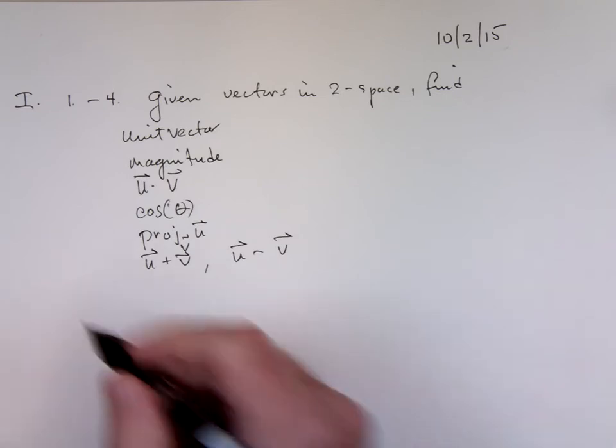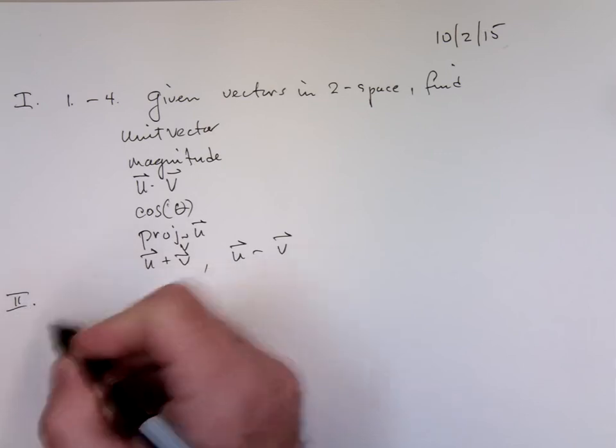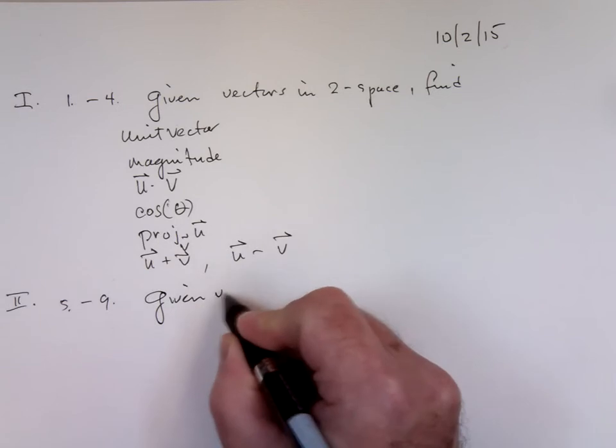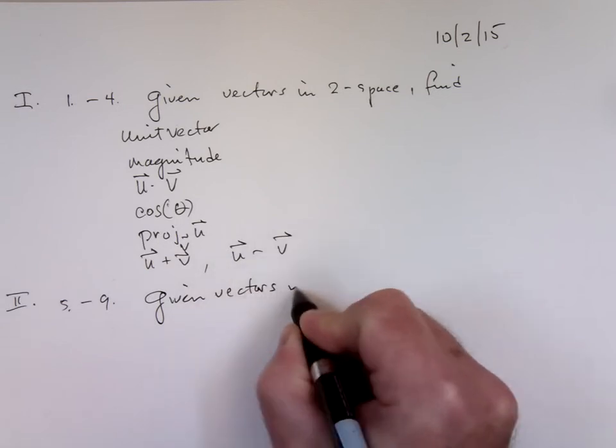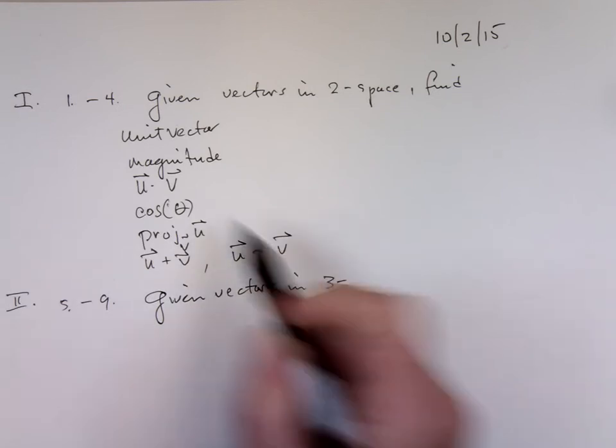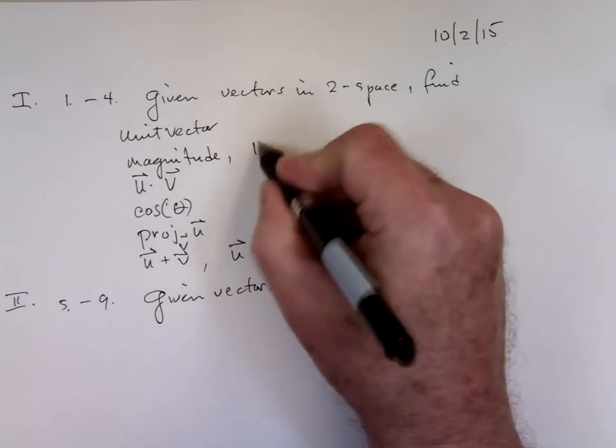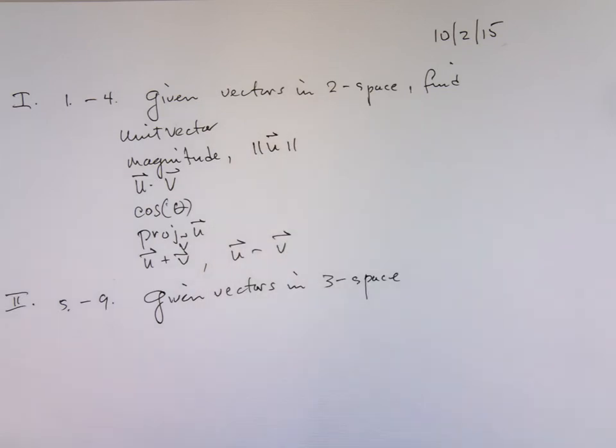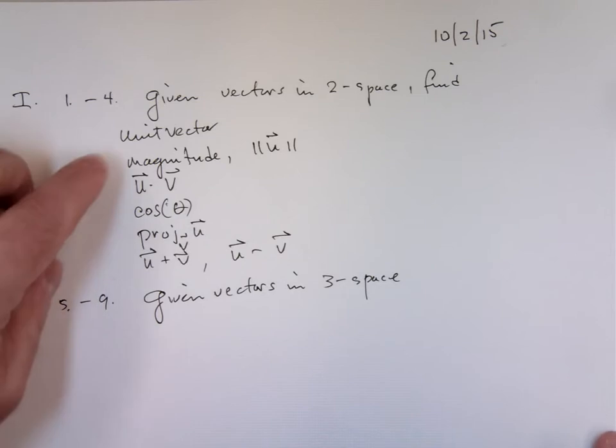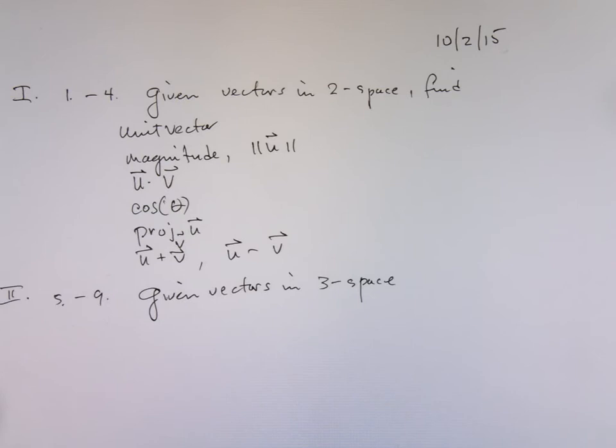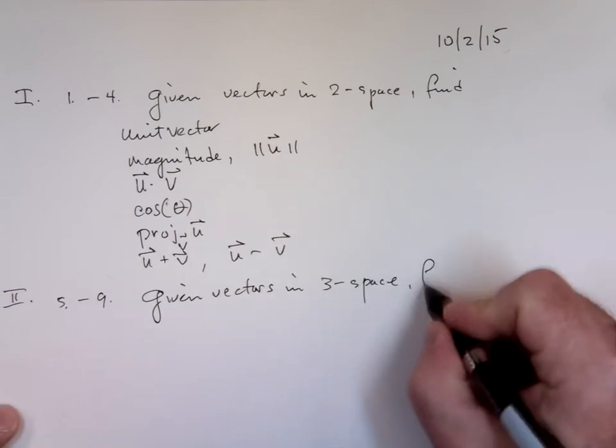Second part, five through nine, is I'm going to be giving you vectors in three space. Is that second thing magnitude? This is magnitude, yes. Given vectors in three space, you know, they're like the same questions.